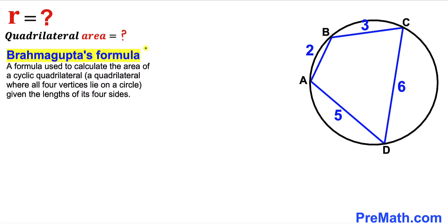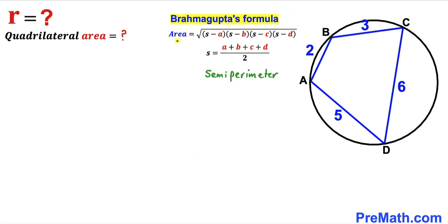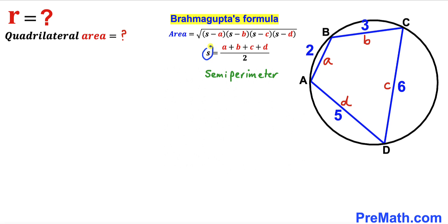We are going to use Brahmagupta's formula — a formula used to calculate the area of a cyclic quadrilateral. The area equals the square root of (s − a)(s − b)(s − c)(s − d), where lowercase a, b, c, and d are the side lengths, and s is the semi-perimeter equal to (a + b + c + d) / 2.